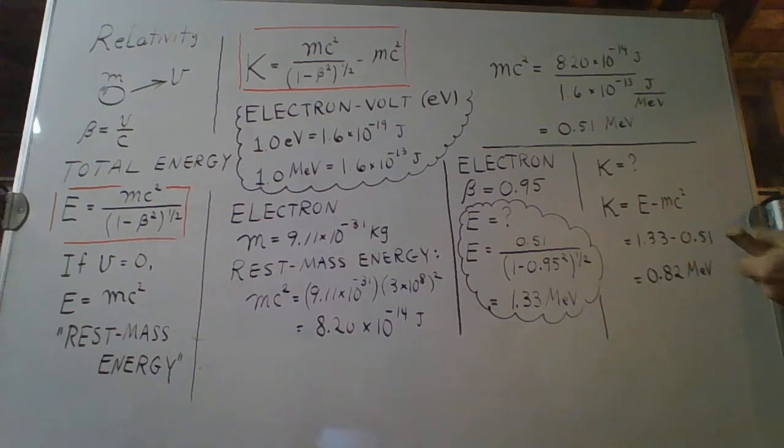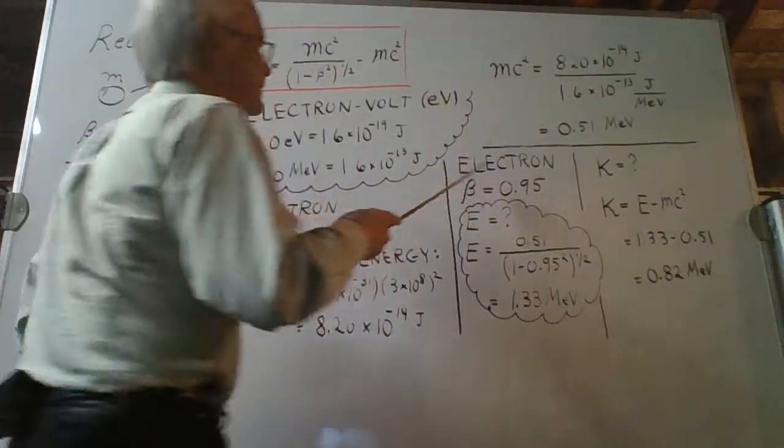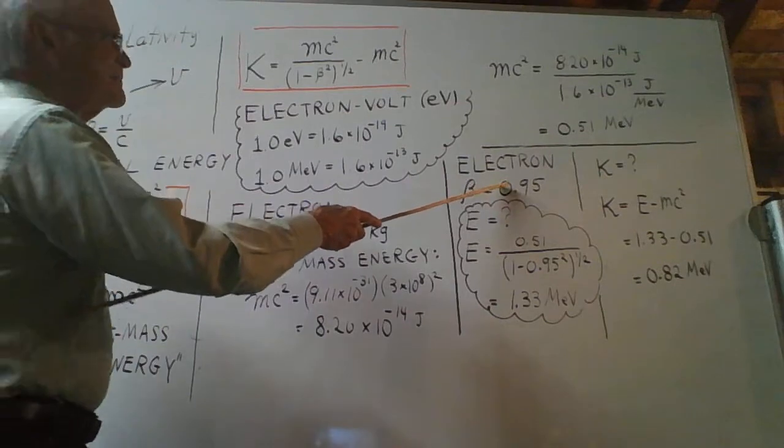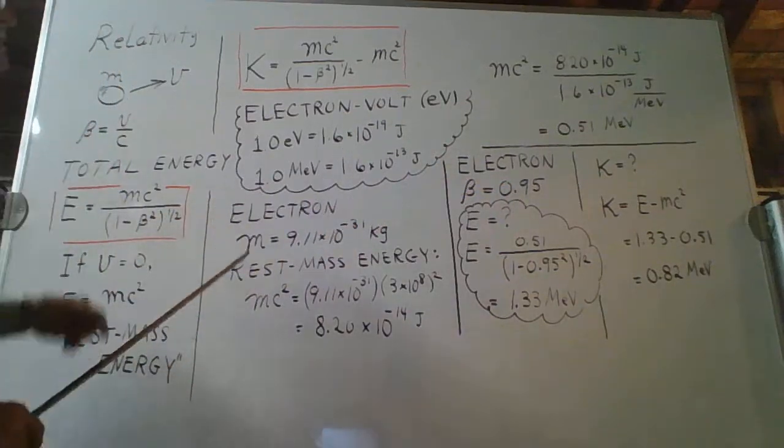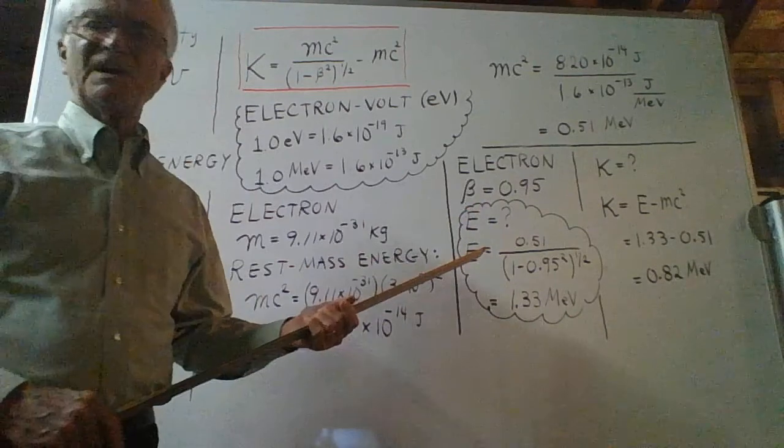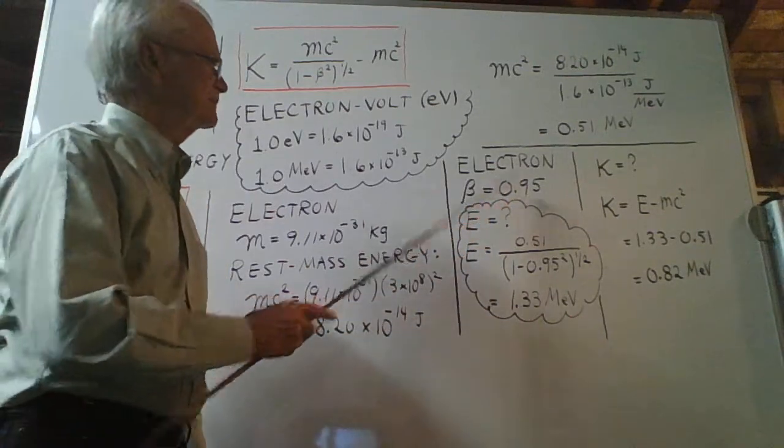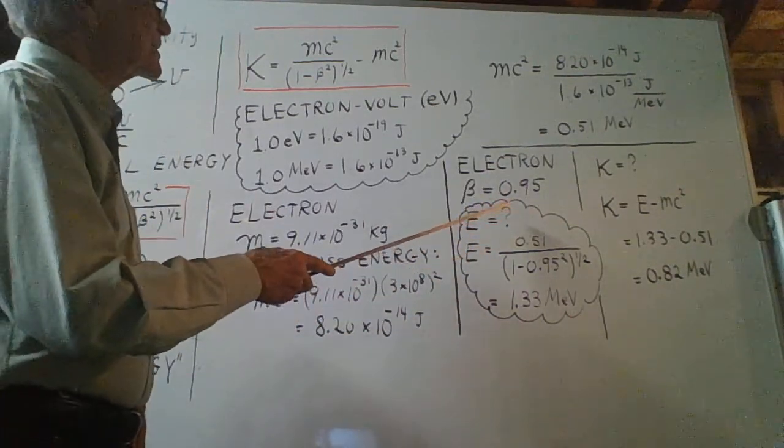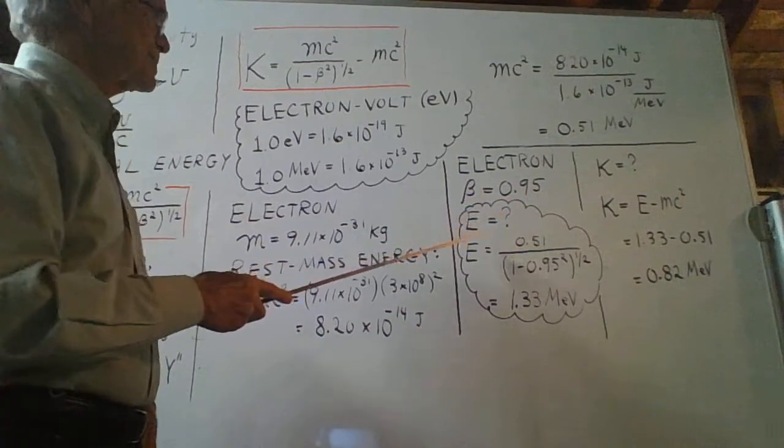Now, consider this example problem. We have an electron. Its beta is 0.95. That means that the speed of this object is 95% of the speed of light. And we ask the question, what is that electron's total energy, E?